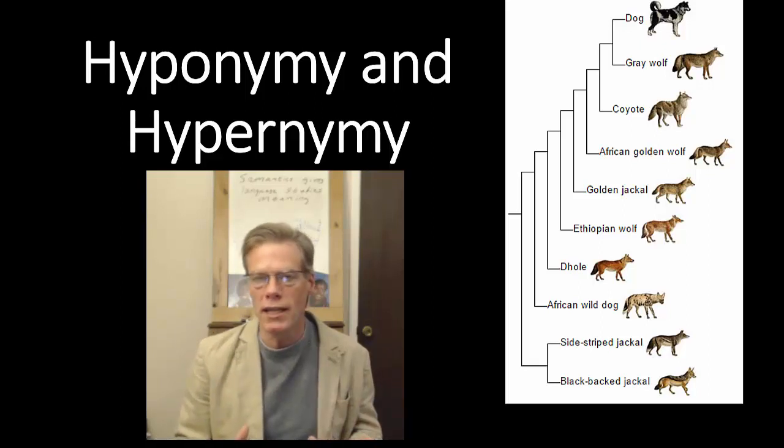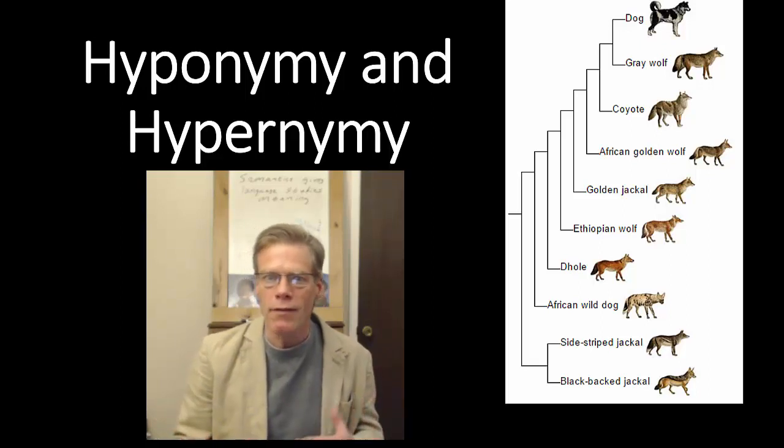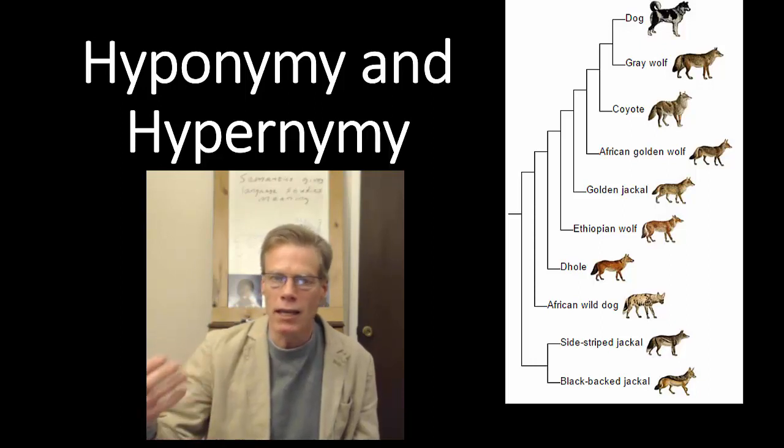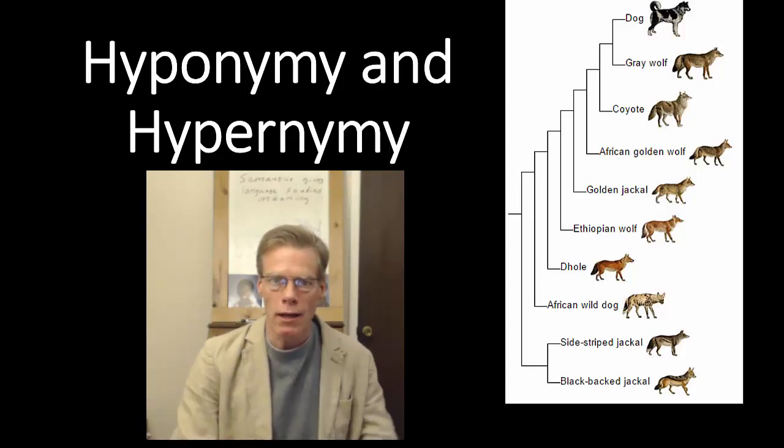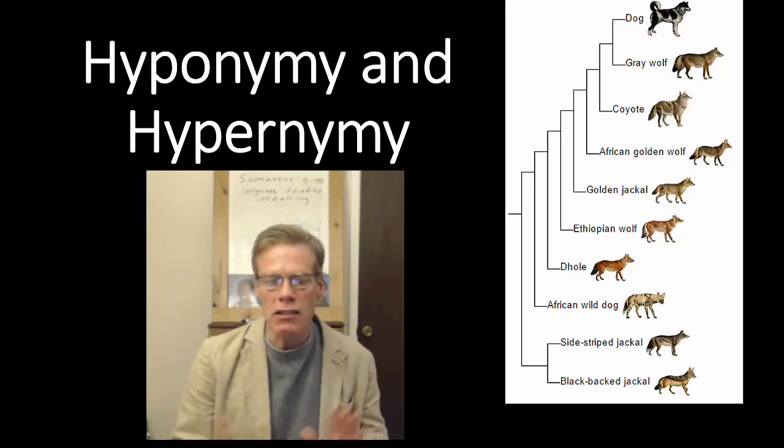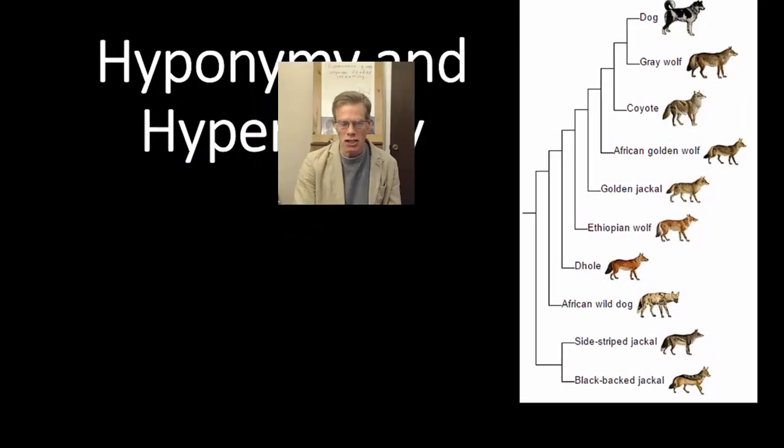So, that's going to be hyponyms of dog. And then a hypernym of dog would be canine. And then a hypernym of canine would be mammal. And we could go on up. That's a good way to establish meaning relationships.